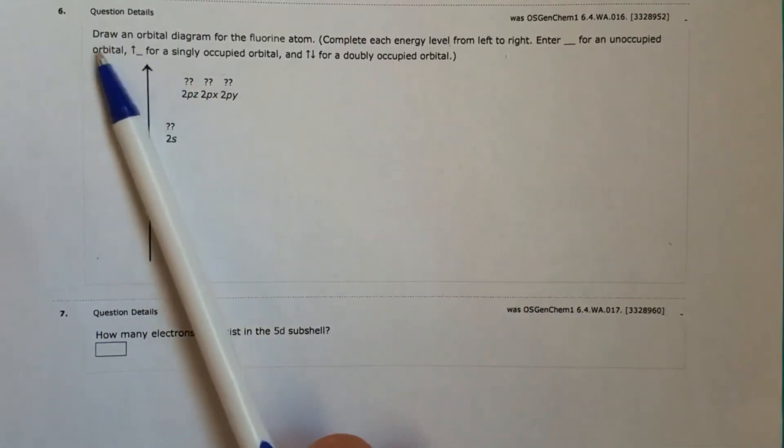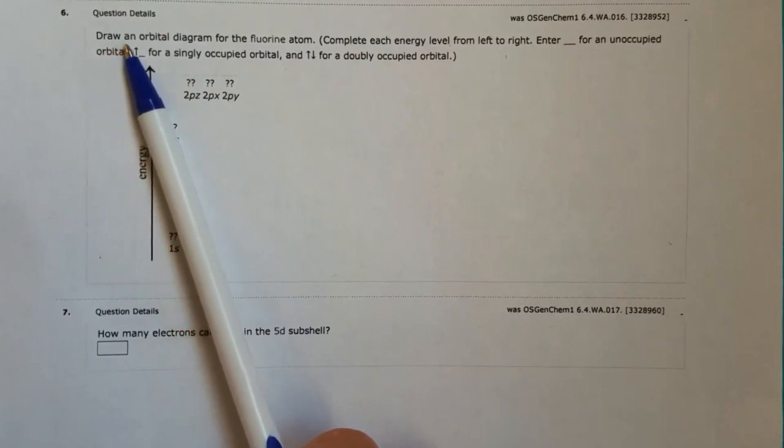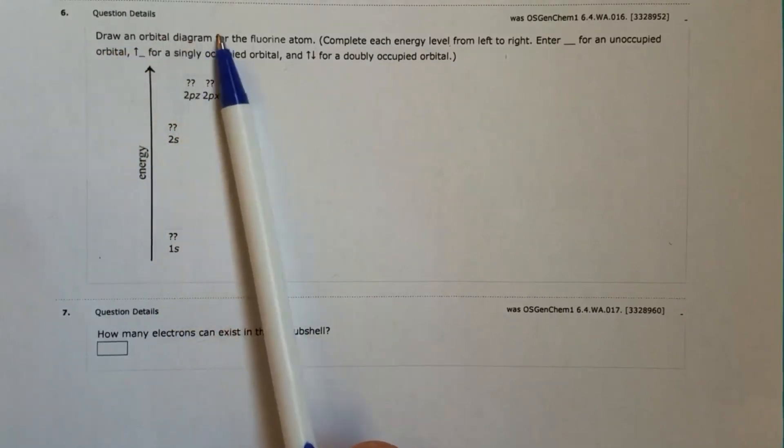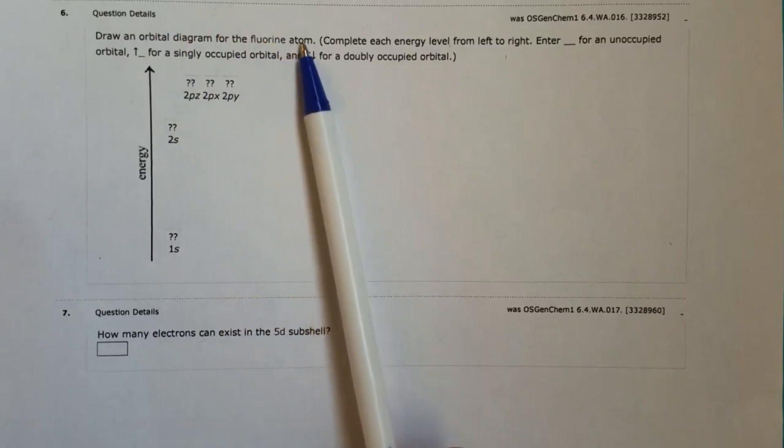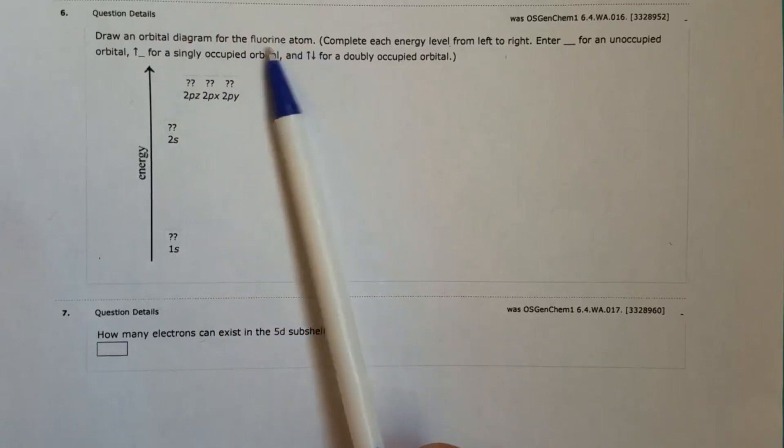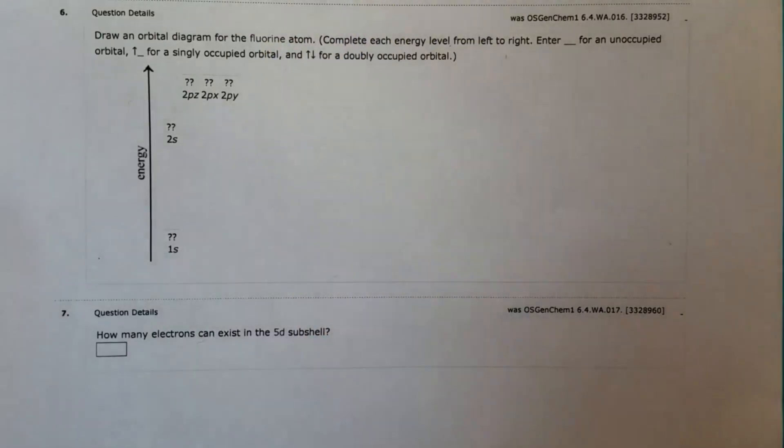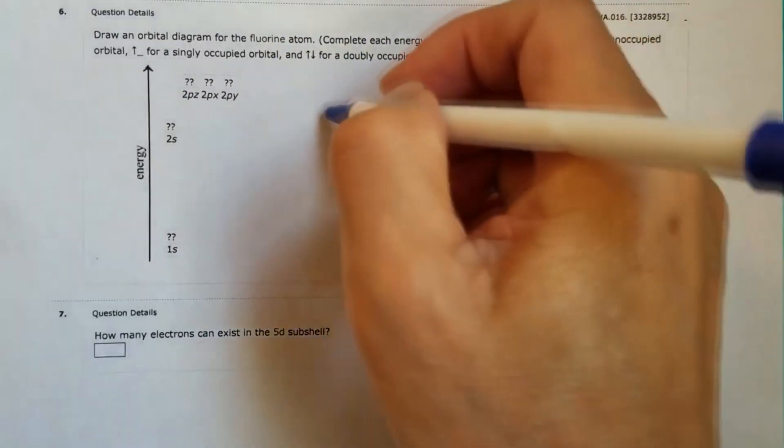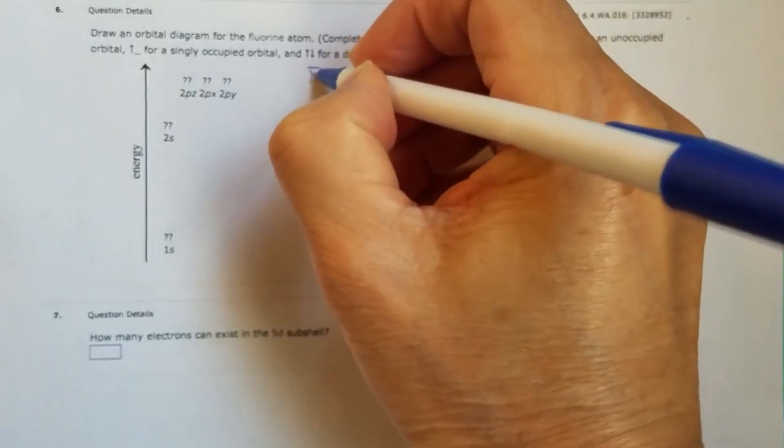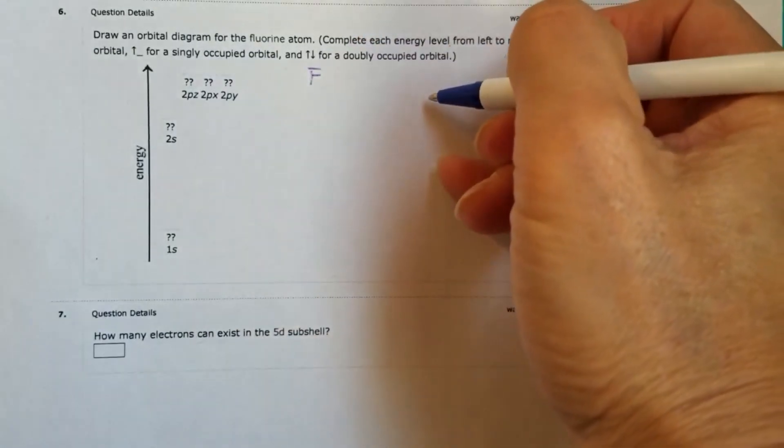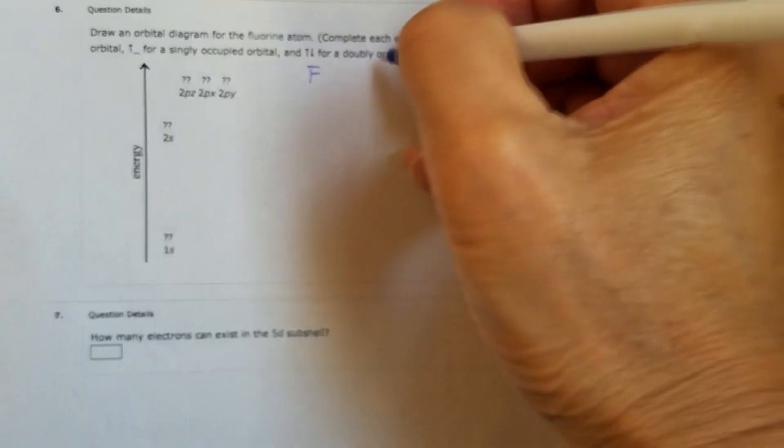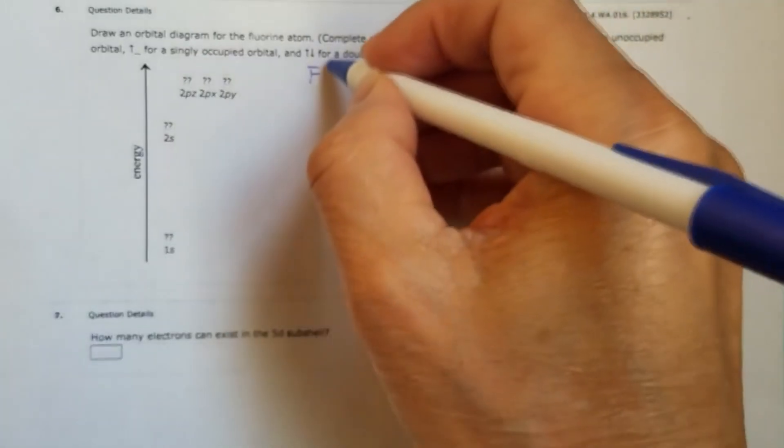Let's take a look at the question. Draw an orbital diagram for the fluorine atom. So the keyword here is fluorine atom, which means it should be just F. That's just an atom. No charge, it's not fluoride. All right, so it's this one and not that one.